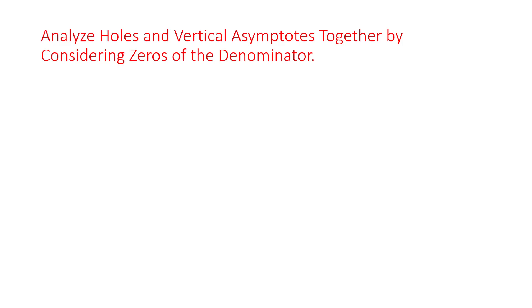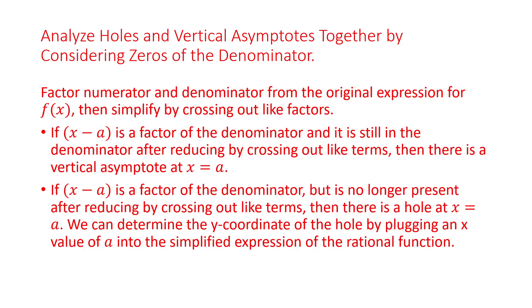First, analyze holes and vertical asymptotes together by considering zeros of the denominator. Factor the numerator and denominator from the original expression for f of x, then simplify by crossing out like factors. If x minus a is a factor of the denominator and it's still in the denominator after you cross out the like terms, then there's a vertical asymptote at x equals a.